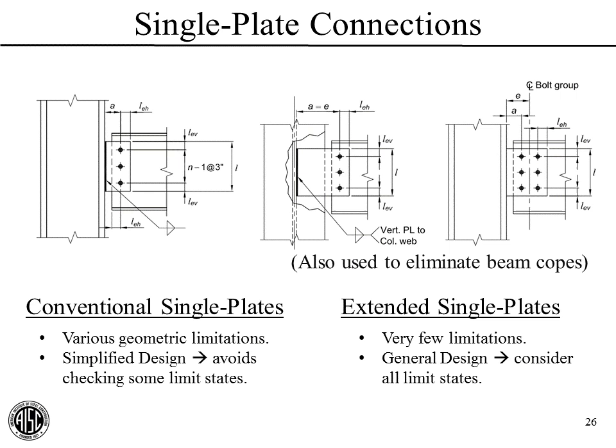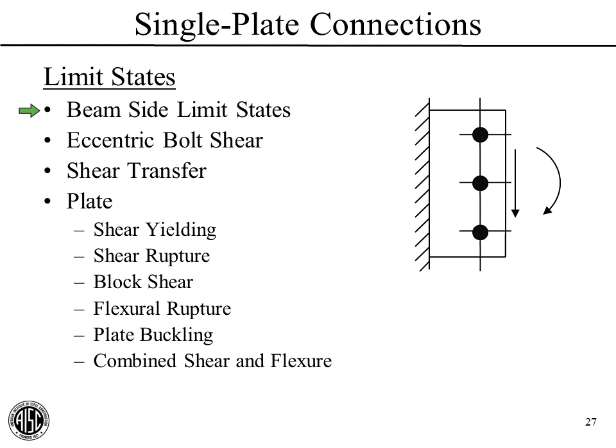The limit states in general include the various beam-side limit states such as shear transfer, bearing and tear-out, coped beam flexure, and others we talked about last time. We have eccentric bolt shear rupture and shear transfer. Once we get into the plate, we have shear yielding, shear rupture, and block shear—our three basics seen many times. Then we have flexural rupture, which is similar to what we saw for angles. We have plate buckling—that's new—and combined shear and flexure, also new to us in this webinar series.